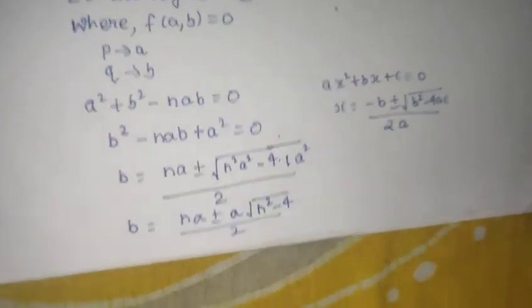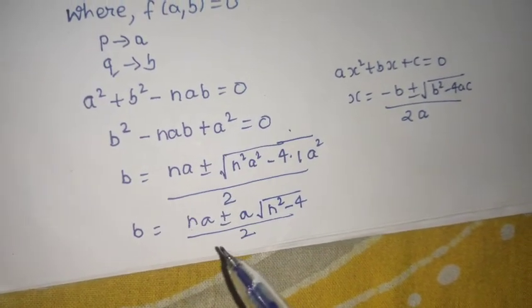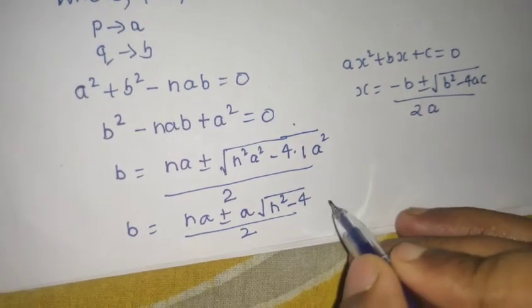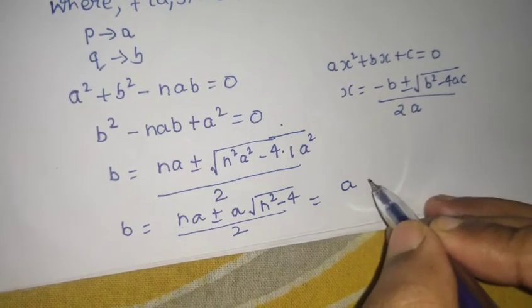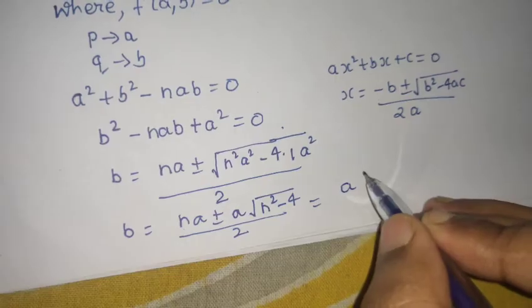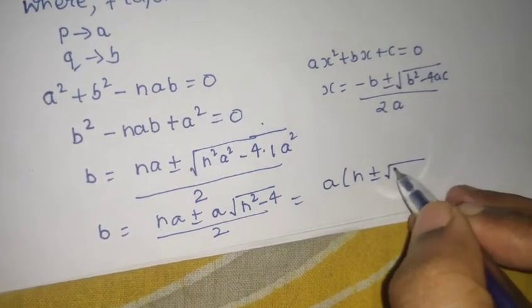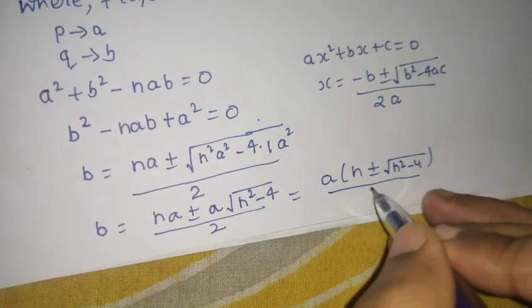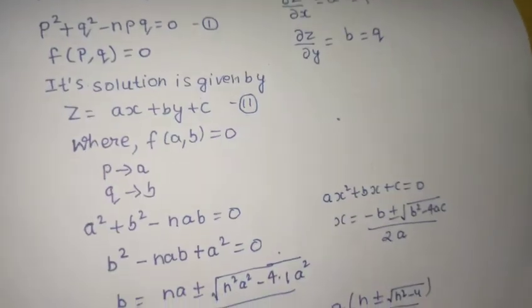Okay? So, that is it. I think this form, moreover you can write this as A if you take out. So, N plus minus under root N square minus 4 divided by 2.